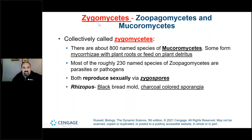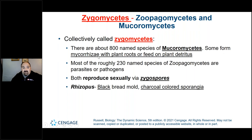The zygomycetes are another phylum of fungi, with about 800 named species of mucoromycetes. The subgroups zoal, apagomycetes, and mucoromycetes are in the grouping of these zygomycetes. They reproduce via zygospores — hence the name. Some form mycorrhizae with plant roots or feed on plant detritus. One species of zygomycetes is Rhizopus — black bread mold.